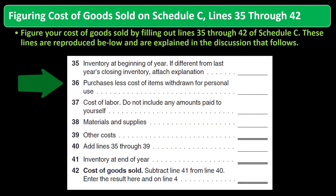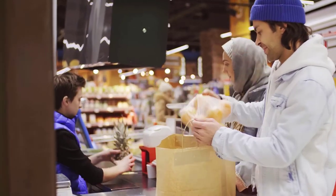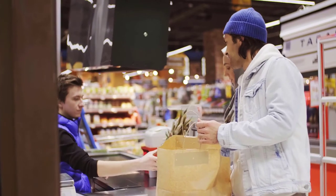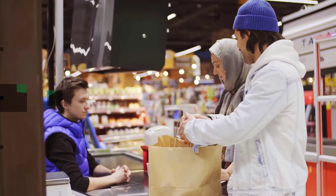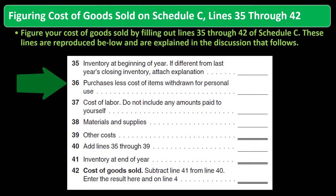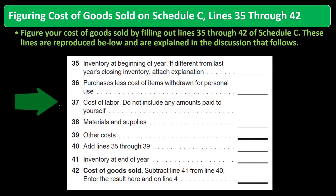Line 36: Purchases less cost of items withdrawn for personal use. This is the purchases line. If you were just buying something, marking it up, and selling it, this line captures all your purchases. If you were manufacturing — not just buying, marking up, and selling — you'd also have Line 37, cost of labor, since labor is part of the cost of the ending inventory you're selling. Do not include any amounts paid to yourself.